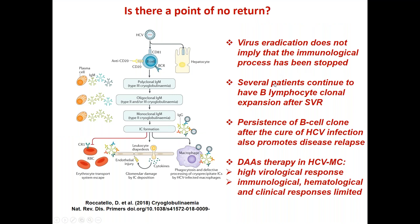Viral eradication does not imply that the immunological process has been stopped. Several patients continue to have B lymphocyte clonal expansion after sustained viral response, and persistence of the B cell clone after cure of infection also promotes disease relapse. We can conclude that direct antiviral agent therapy in HCV mixed cryoglobulinemia induces a high virological response but limited or no response regarding immunological, hematological, and clinical outcomes.